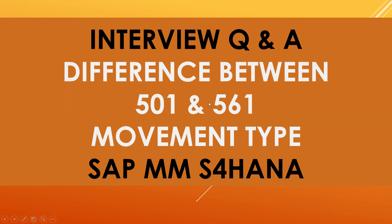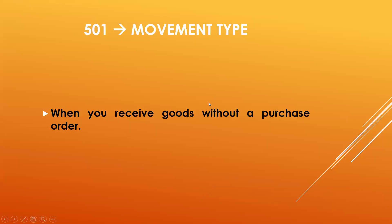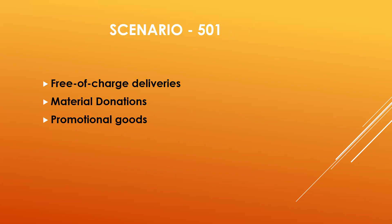Movement type 501 is used when you receive goods without a purchase order. A follow-up question they may ask is: on what scenario will you receive goods without a purchase order? Examples include free of charge delivery, material donation, or promotion.